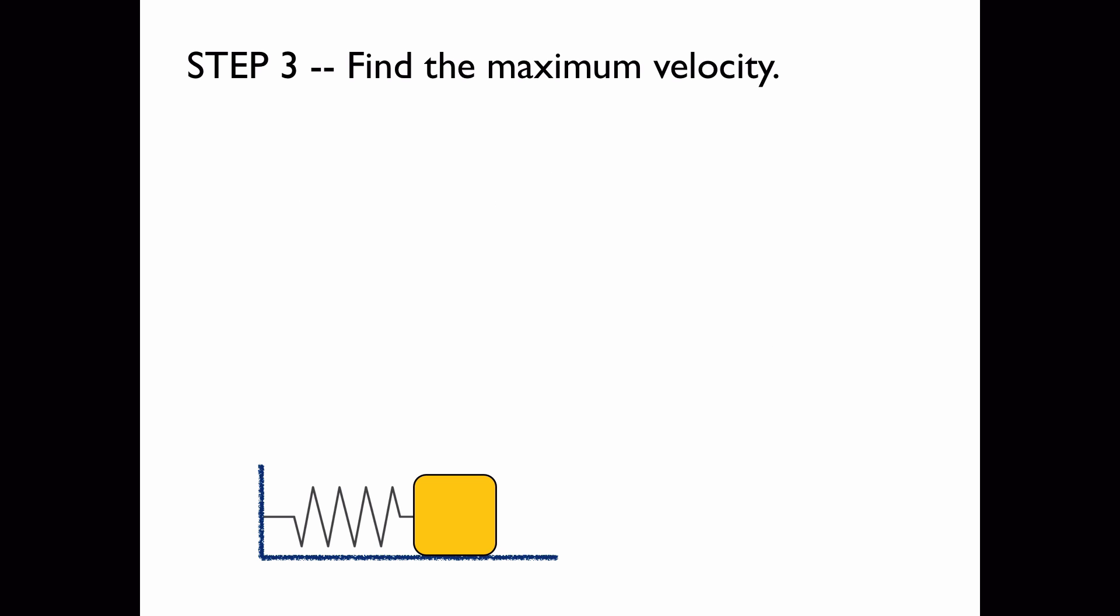Next we'll find the maximum velocity. We do this by setting the kinetic energy equal to the total energy, because the velocity is maximum when all of the energy is kinetic.